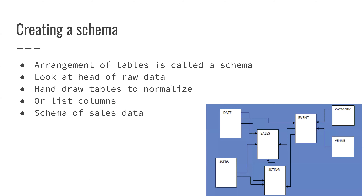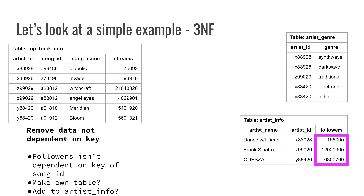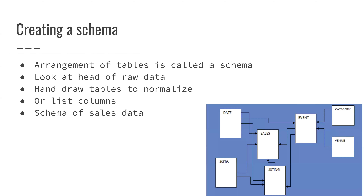One of the things that underlies this is the notion of a schema. In the last example, we were making a schema where we had our top track info with a primary key of song ID, and then a foreign key of artist ID that allowed us to relate other tables back to it. A schema defines the relationships among these tables. For the AWS data — where we have sales information, dates, events, and all that — these are related in the schema. That diagram on the bottom right shows how the different keys connect to one another and allow you to bring data together.